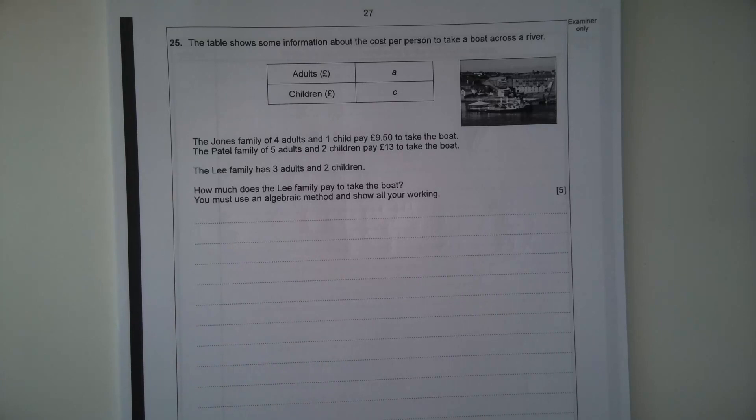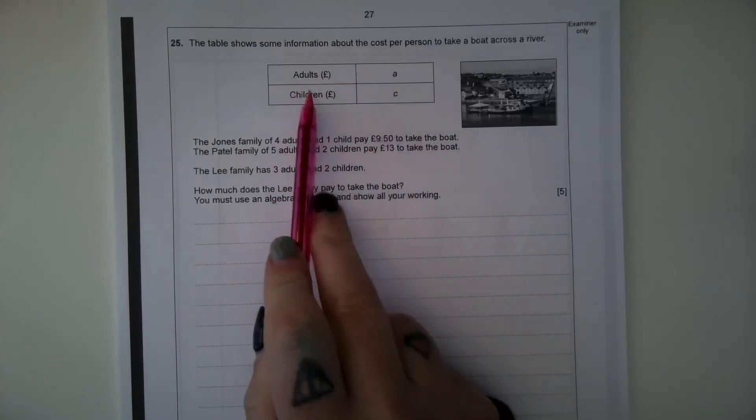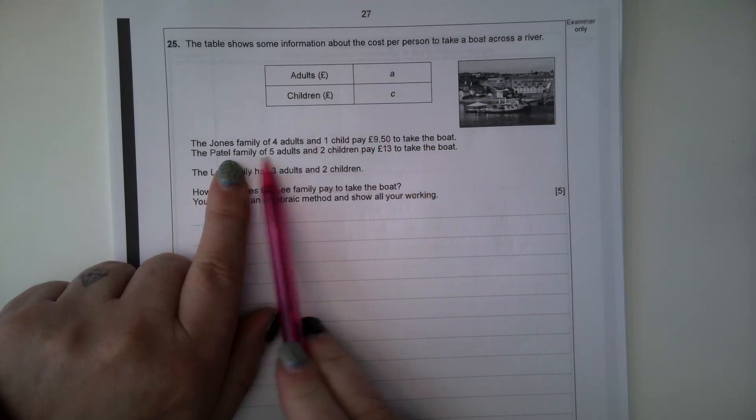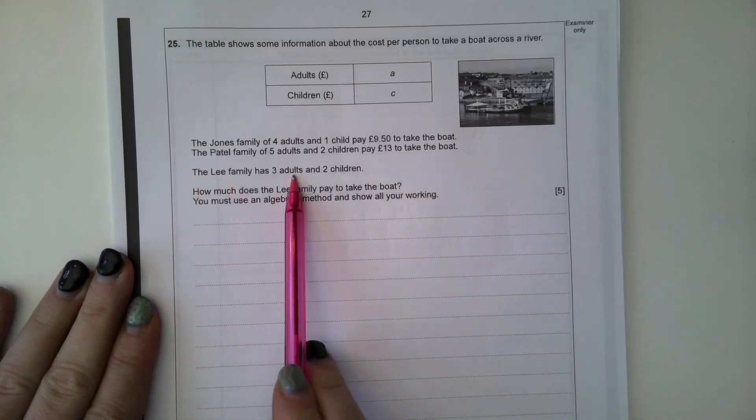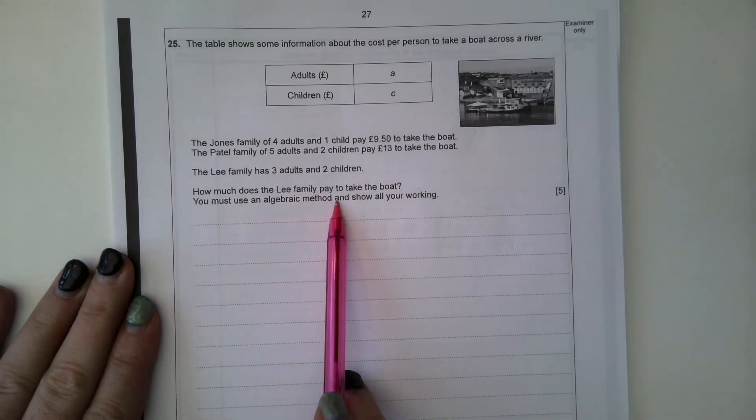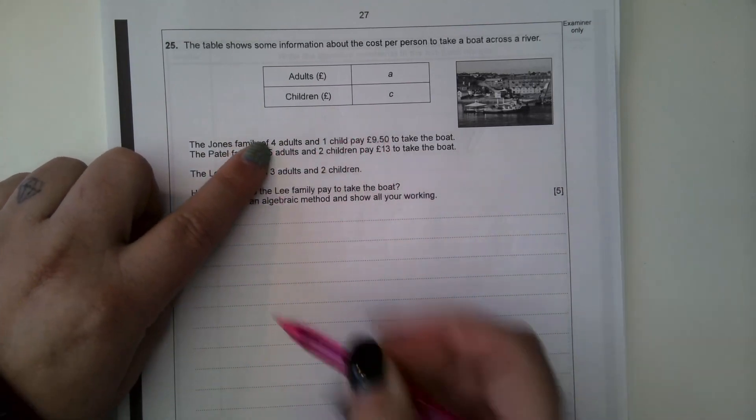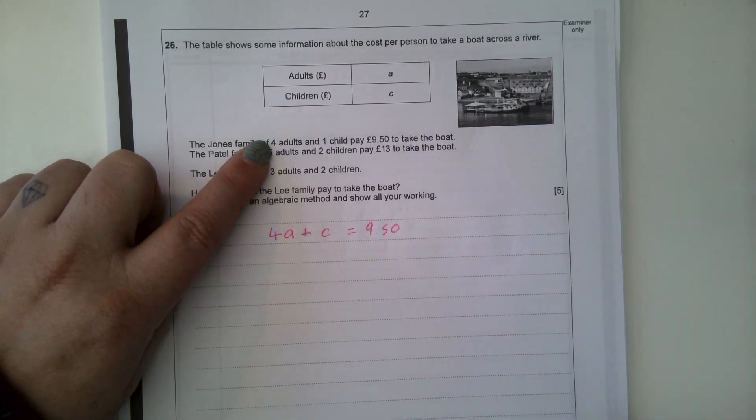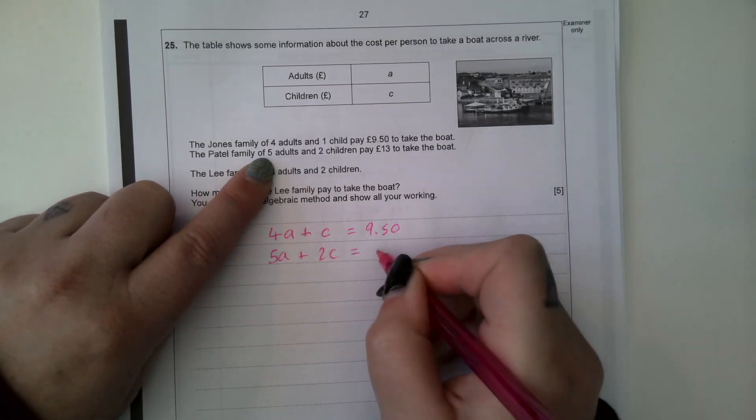Question 25. The table shows some information about the cost per person to take a boat across a river. So adults are represented by A, children are represented by C. The Jones family of 4 adults and 1 child pay £9.50. The Patel family of 5 adults and 2 children pay £13. The Lee family has 3 adults and 2 children. How much does the Lee family pay to take the boat? You must use an algebraic method and show all of your working. So I'm going to form two simultaneous equations using this information here.